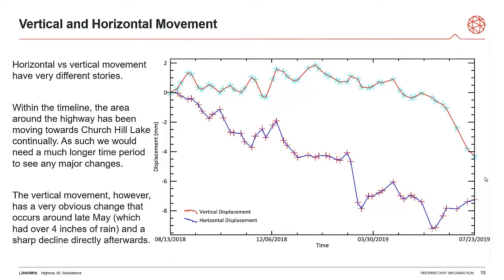One of the last things we always like to check is vertical and horizontal movement over this region. This is over that point on the highway where the collapse occurred. We have here both horizontal and vertical movement matched over time. Within the timeline we have, the area around the highway that was moving toward Churchill Lake was moving there horizontally and continually. To really pull out any information from that, we would need to increase our baseline to see if this was normal movement or if the highway has just been moving into the lake bed since it was built. The earth can move naturally, so we can't say too much on whether that is a natural or unnatural effect.